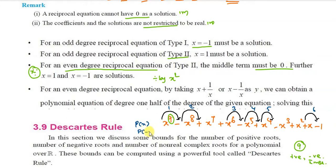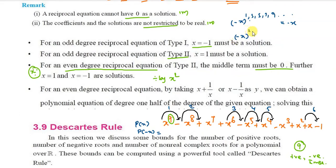To find negative roots, evaluate p(minus x). When substituting minus x: odd powers become minus, even powers stay plus. So minus x^9 becomes plus x^9 (odd power flips), minus x^8 becomes minus x^8 (even stays), minus x^7 becomes plus x^7, plus x^6 stays plus x^6, minus x^5 becomes plus x^5, plus x^4 stays plus x^4, minus x^3 becomes plus x^3, plus x^2 stays plus x^2, minus x becomes minus x, minus 1 stays minus 1.